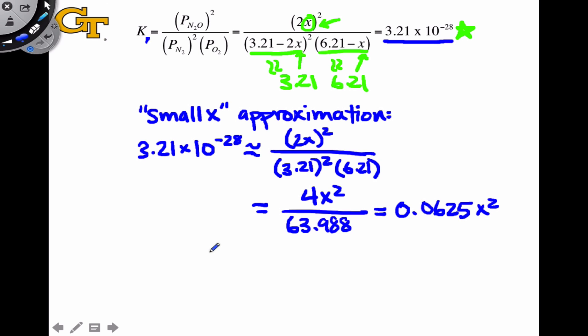In any event, we've made our lives a lot easier. We just need to divide both sides by 0.0625 and then take the square root of both sides of the equation to solve for x. In doing that, we end up with 7.17 times 10 to the negative 14 atmospheres.